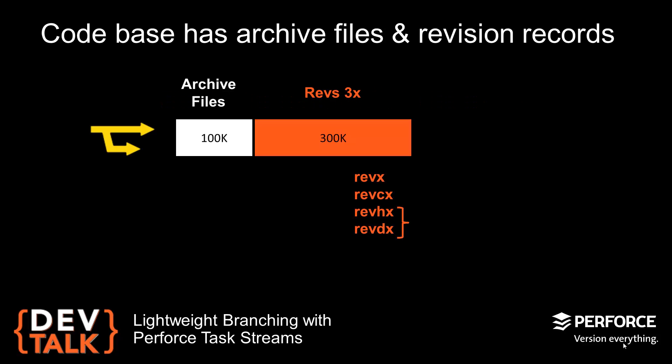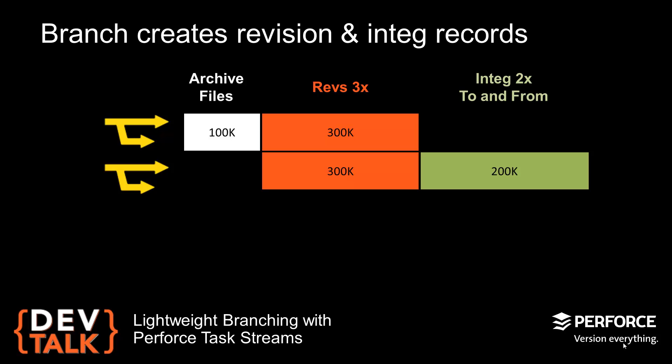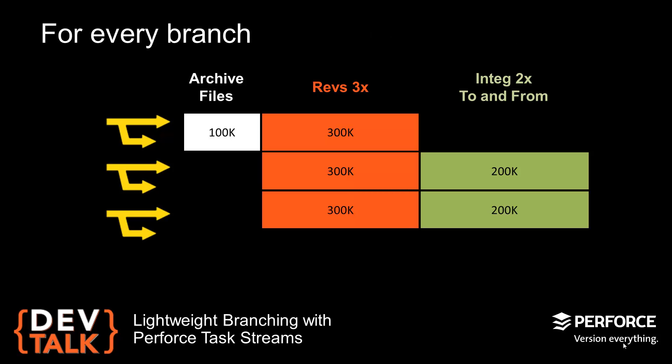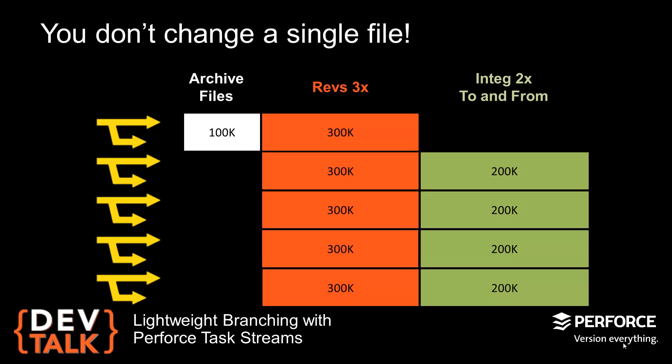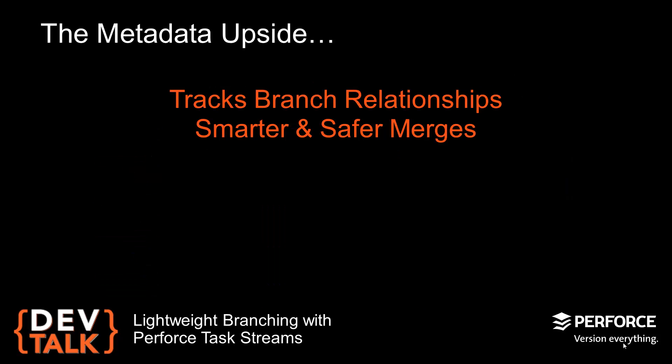A codebase with 100,000 files creates 100,000 file archives for the content and 300,000 revision records of metadata. Creating a branch adds 300,000 more revision records and two integration records for every file revision — one to keep track of the source and one for the target of the integ — that's 200,000 integration records. But remember, the archive files are lazy copies, so until a file is actually changed, there's no content overhead for creating that branch. But these records get created for every branch, even if you don't change a single file. And all of that metadata is key to tracking the relationships between the branched files — that's what makes Perforce branching and merging smarter and safer.